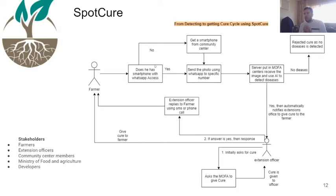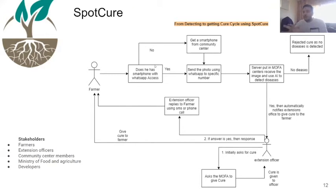After the photo is sent, the extension officer requests the cure from MOFA, and MOFA delivers it to the officer who gives it to the farmer. Stakeholders include the farmer, extension officer, community center members, MOFA, and the developers. For sustainability, we're considering a monthly subscription or pay-per-photo model — for example, five Ghanaian cents per photo — to keep the system funded beyond the project period.